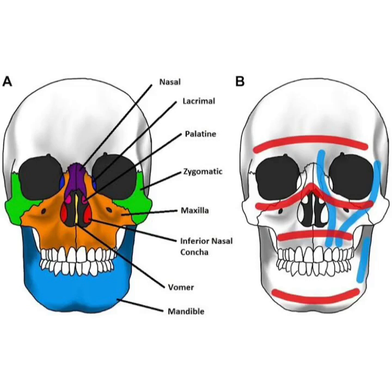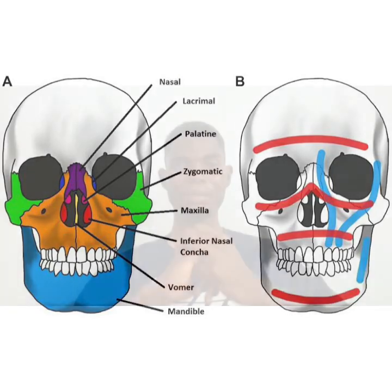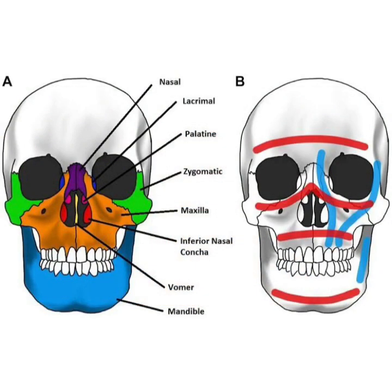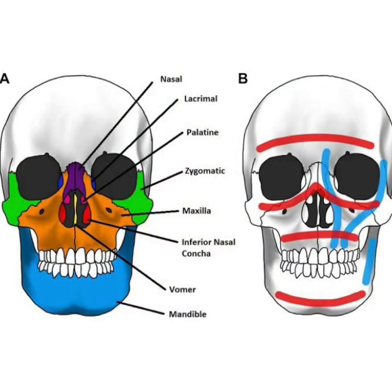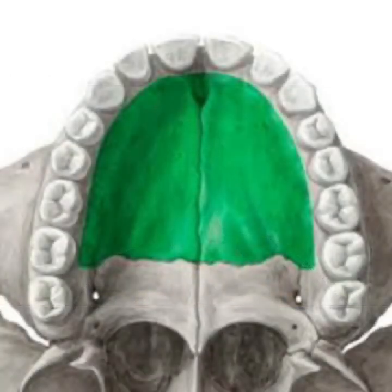The next bone is the maxilla, which is also two in number and forms the hard palate. The next bone is the vomer, a single bone located at the rear part of the nasal cavity. Then the palatine bone, located at the rear part of the oral cavity — they fuse together to also form the hard palate.